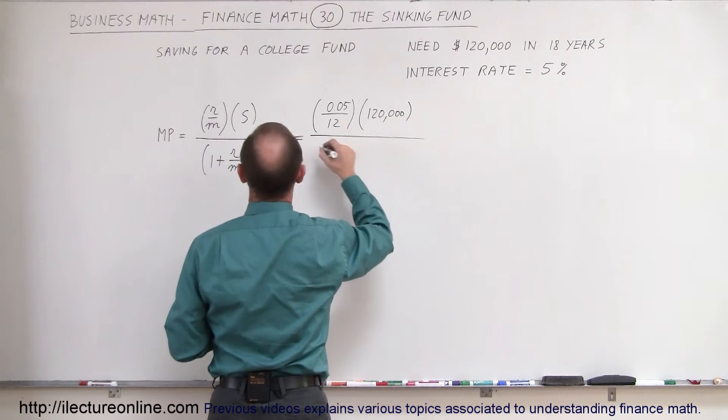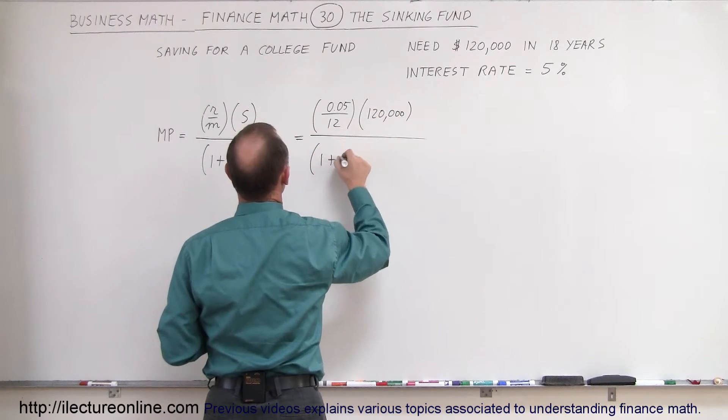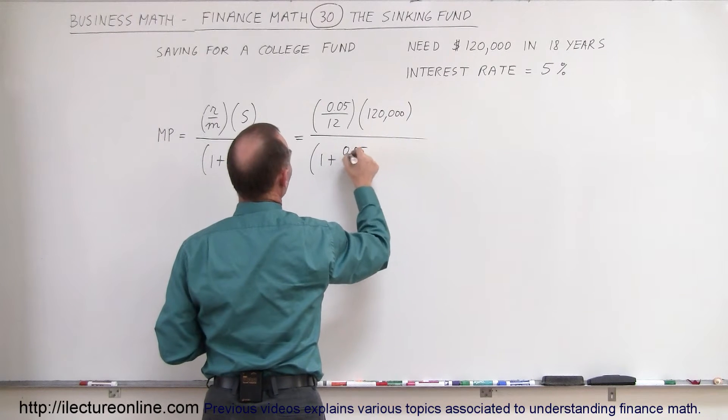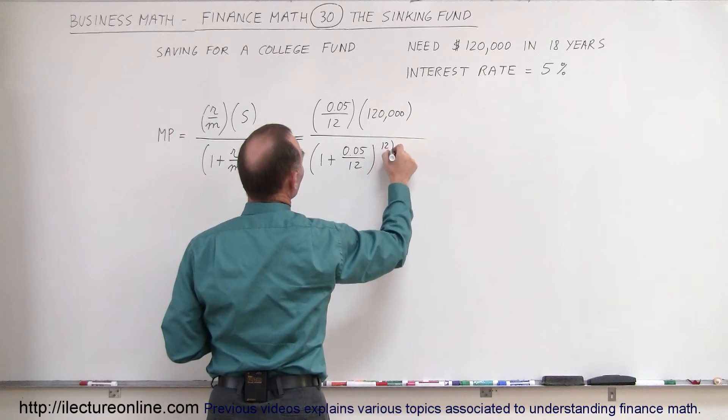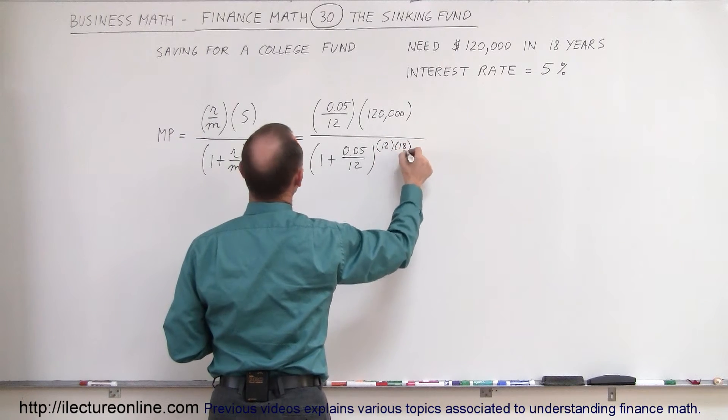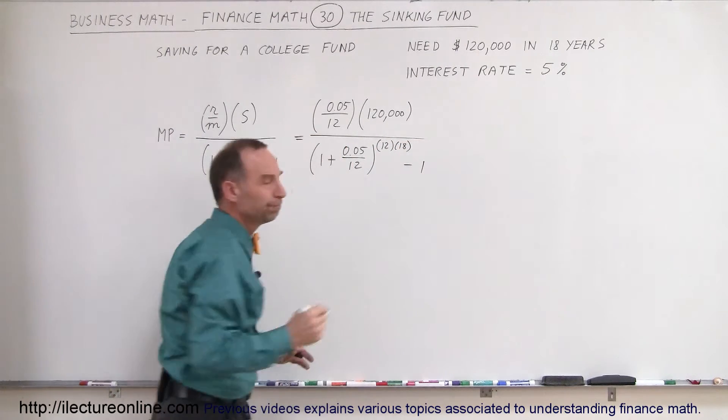...the whole thing divided by the quantity 1 plus the rate, 0.05 divided by 12, raised to the m would be 12, time would be 18 years, and then minus 1.